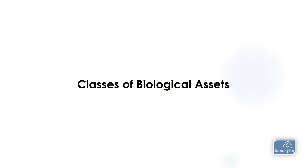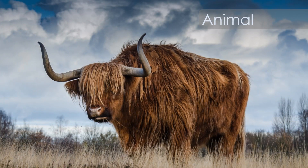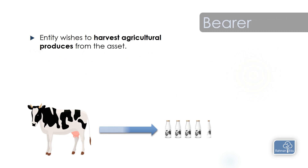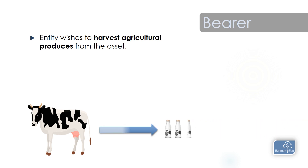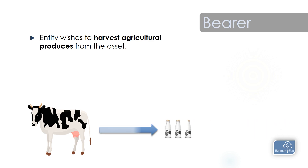Let's talk about the classes of biological assets. Under biological assets we have animals and plants. We have consumables, which are to be harvested as agricultural produce or sold as biological assets. Then we have bearer assets, where the entity doesn't wish to harvest the biological asset itself. Rather, the entity wishes to harvest agricultural produce — for example, the company takes milk from the cow rather than harvesting the cow for meat or skin. That makes it a bearer biological asset.